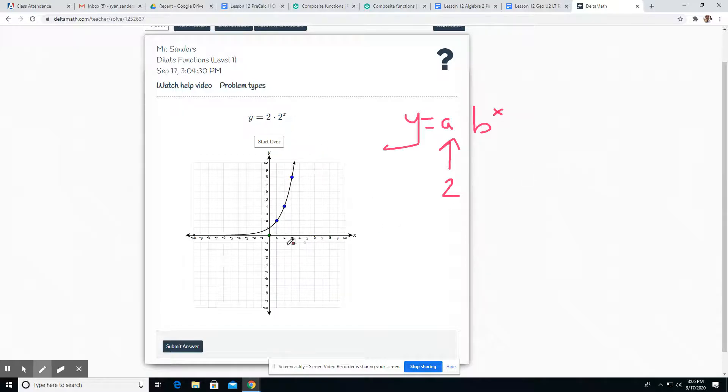now we have that 2 in front so we'll just go ahead and test it. You may want to do a table, that's kind of the easiest way to approach these. So when we have a 1 right here